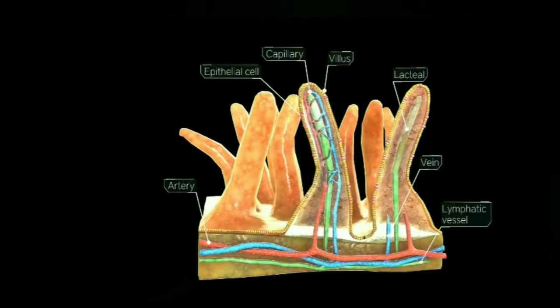Now we will learn about the villi. There are seven parts in the villi: artery, epithelial cell, capillary, villus, lacteal, vein, and lymphatic vessel.